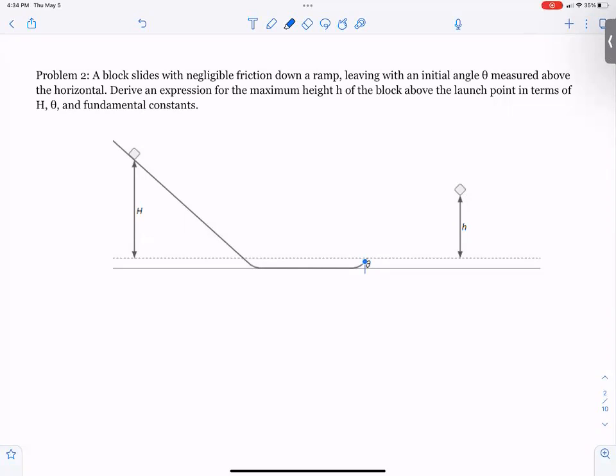Remember to pause or rewind the video as needed. Problem number two: A block slides with negligible friction down a ramp, leaving with an initial angle theta measured above the horizontal. Derive an expression for the max height of the block above the launch point in terms of H, theta, and fundamental constants.